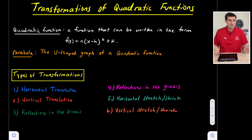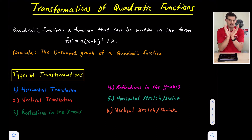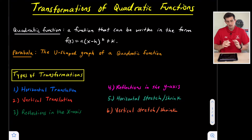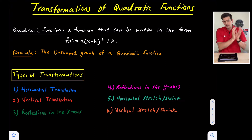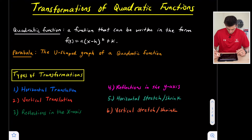Reflecting in the y-axis: if we have a parabola whose vertex is on the y-axis, then the reflection is actually the same as the parent function, y equals x squared. But if we were to shift our graph right or left and then reflect over the y-axis, it would change our position a little bit.